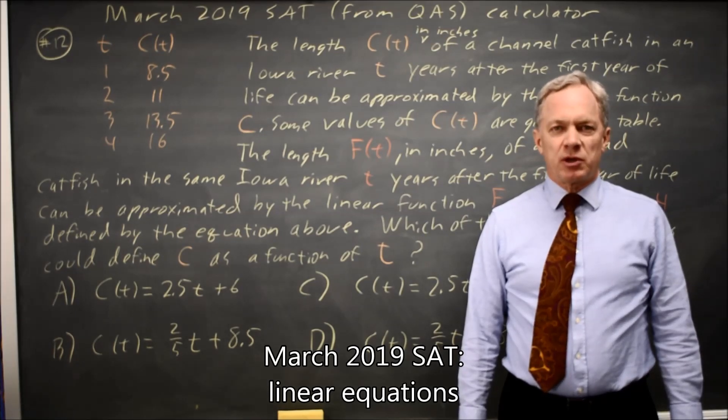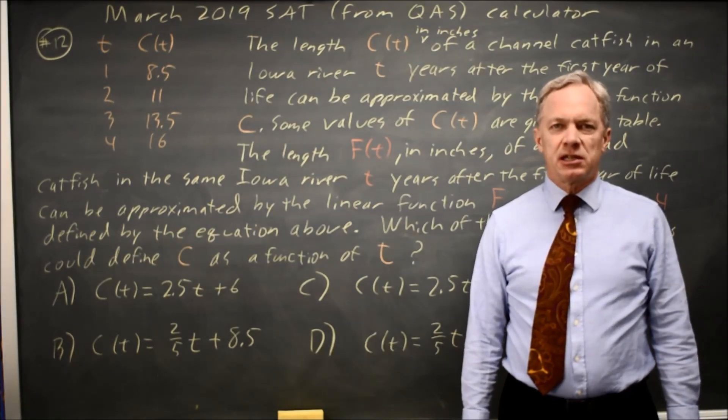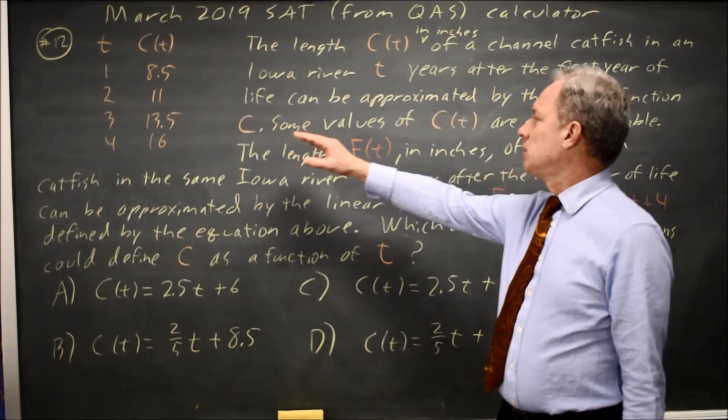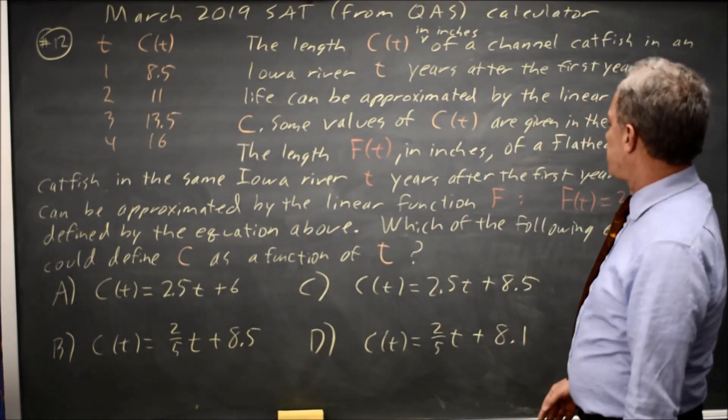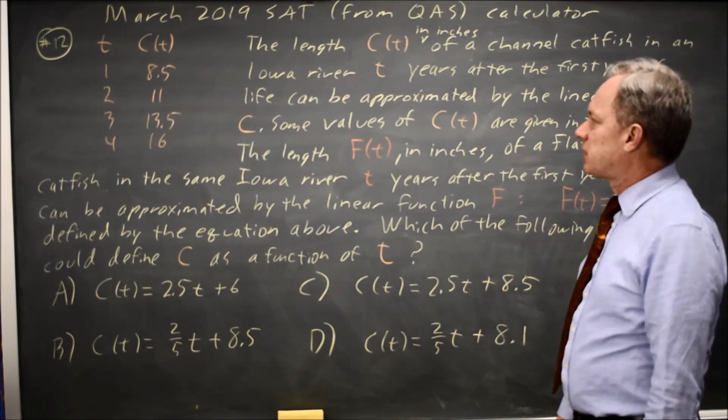This is calculator question number 12 from the March 2019 SAT. College Board gives us a table and a function describing channel catfish and flathead catfish in an Iowa river.